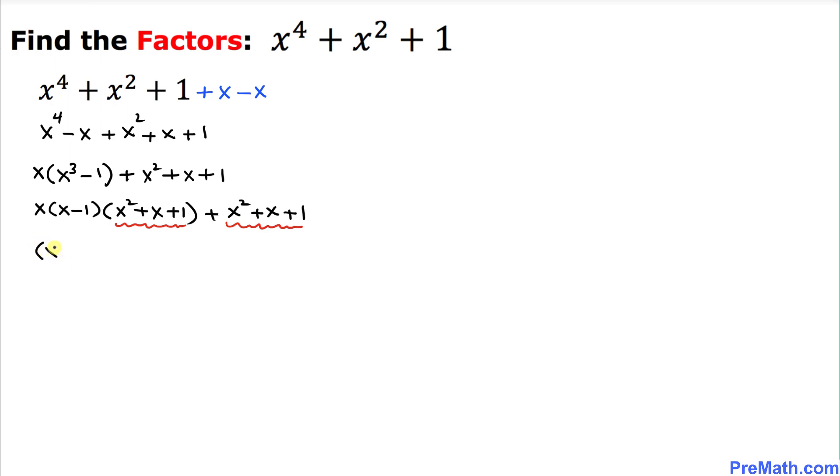Let's do that: (x squared plus x plus 1) outside, and in the bracket we put x times (x minus 1). On the other side, when we factor this out, we're left with just 1, so I can write plus 1 here.